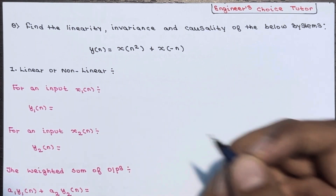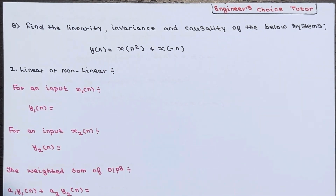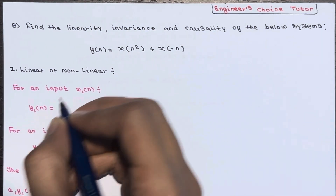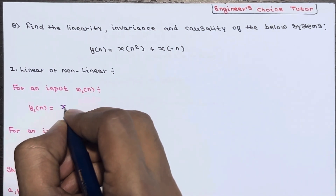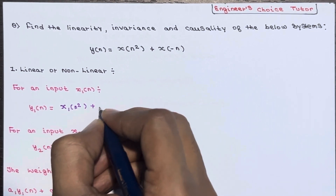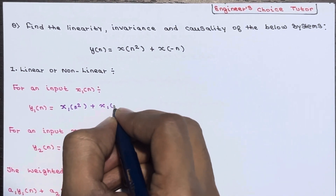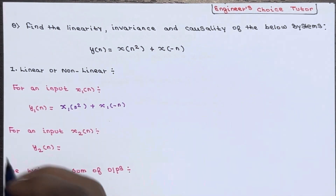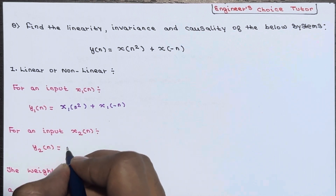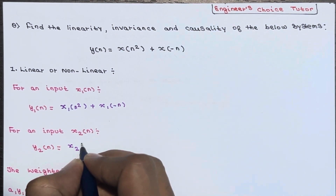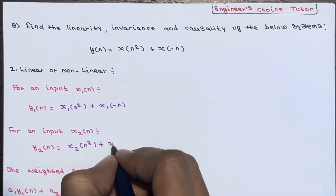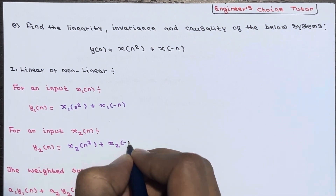Let's check for linearity first. For an input x1 of n, y1 of n becomes x1 of n squared plus x1 of minus n. And for an input x2 of n, y2 of n becomes x2 of n squared plus x2 of minus n.